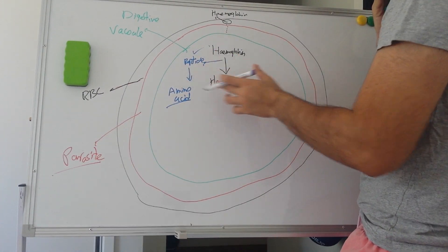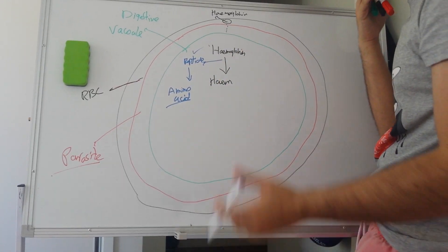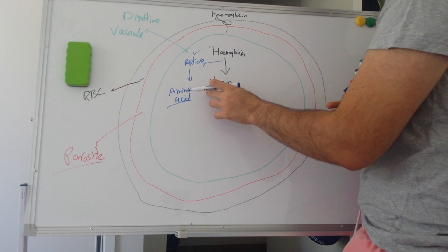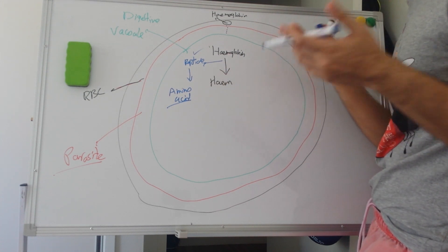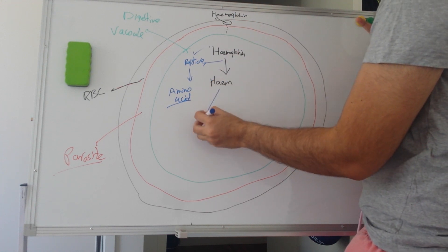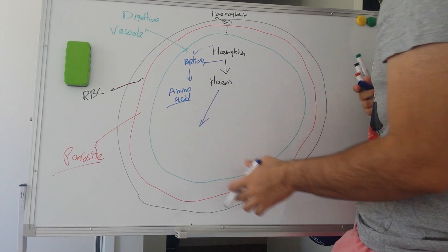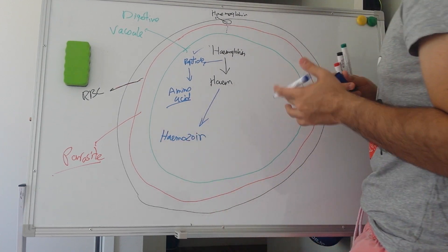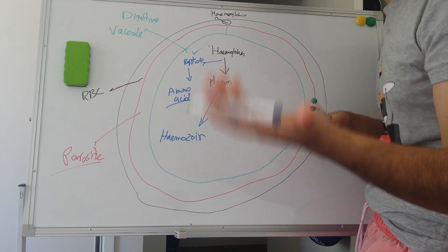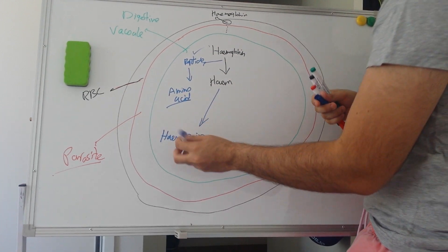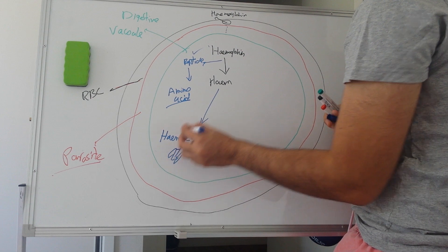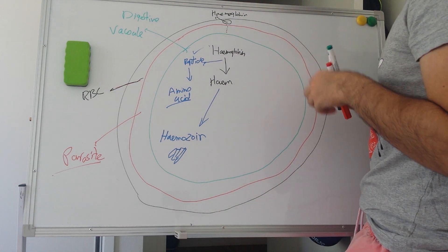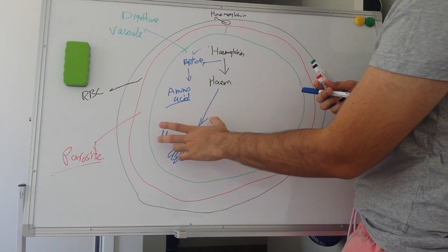Here is the problem: heme is a very soluble thing and it is pretty toxic on its own. The parasite needs to find a way to get rid of the heme because if it accumulates they will die. What they do is a very crucial step — they convert the heme into hemozoin. Hemozoin is a non-toxic, insoluble crystal inside the parasite, allowing the parasite to survive perfectly fine.